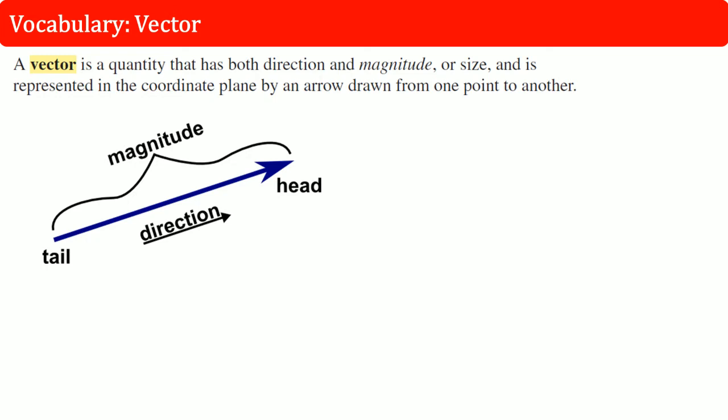Here's how a vector would look like. The far end is the tail. The way the arrow is pointing, which is the head, shows the direction. Based on the strength or the size, you draw the arrow longer or shorter.